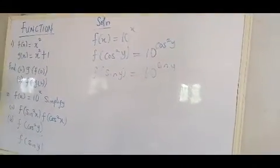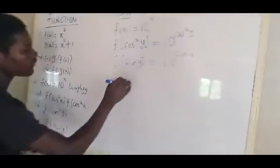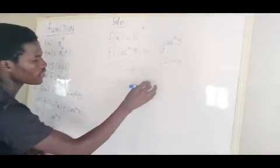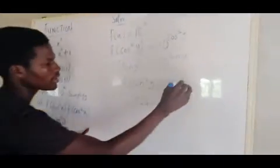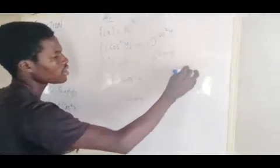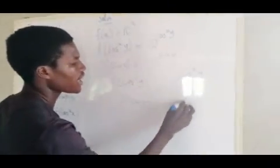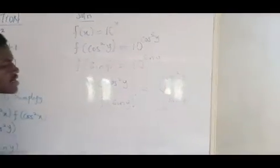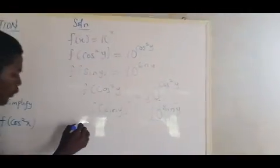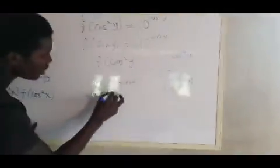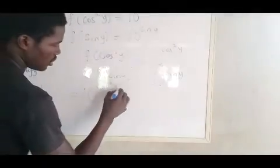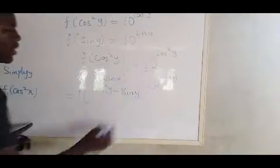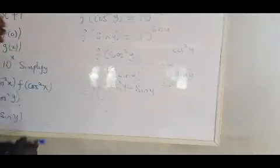Your f(cos²y) over f(sin y) in other words is 10^(cos²y) over 10^(sin y). So you apply indices also. Same base, so you pick one, then you have cos²y. Division in indices will change to subtraction, and that will be cos²y minus sin y. So this is your final answer on this question.